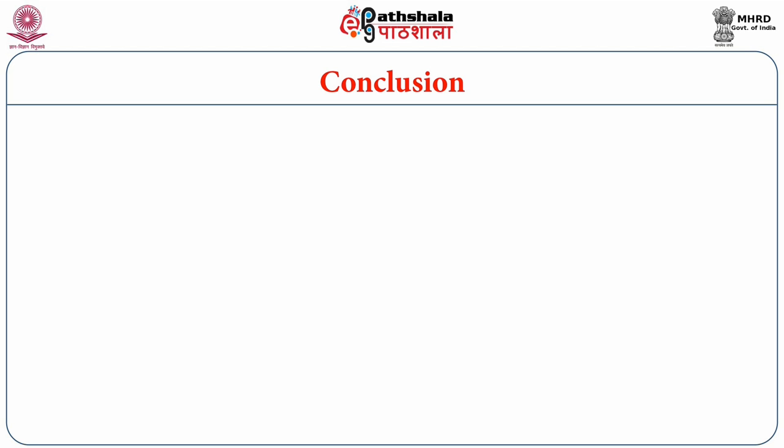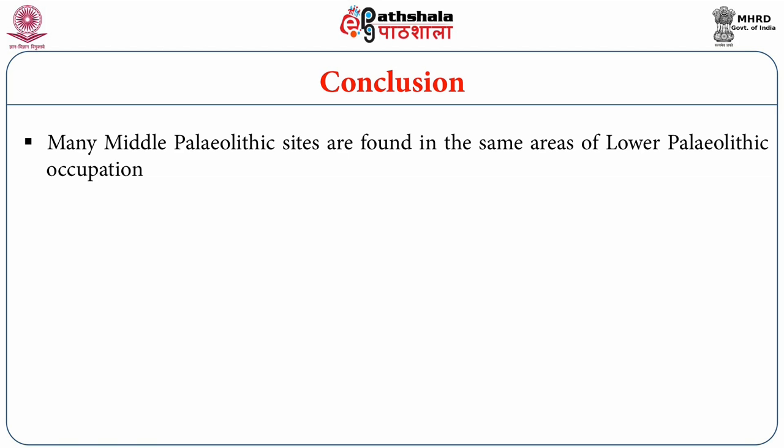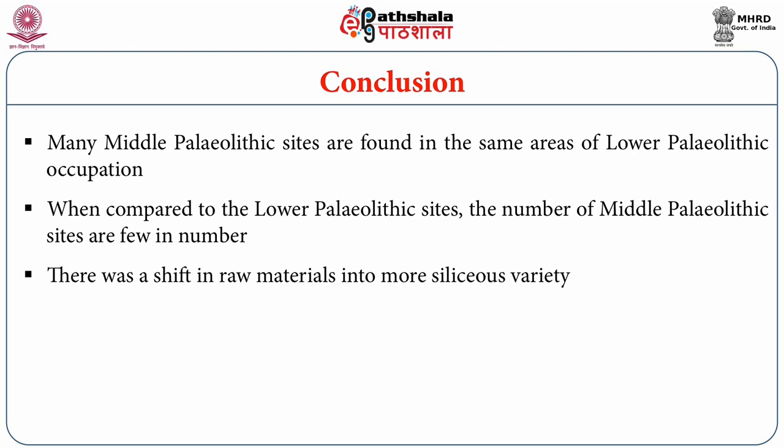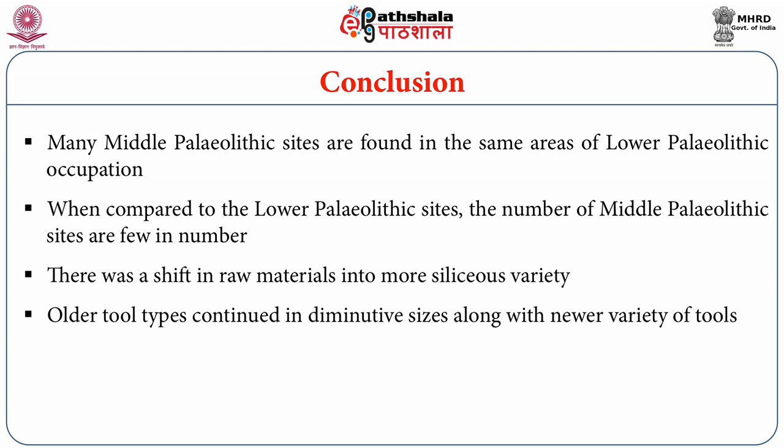In conclusion, many Middle Paleolithic sites are found in the same areas as Lower Paleolithic occupation. When compared to Lower Paleolithic sites, the number of Middle Paleolithic sites is fewer. There was a shift in raw material toward more siliceous varieties — in other words, a preference for high quality raw materials. Older tool types continued in diminutive sizes alongside new flake tool assemblages. In this presentation, we have focused on the Middle Paleolithic as a distinctive phase associated with the emergence of Homo sapiens and their expansion out of Africa. The technology, identified as Middle Stone Age technology, is represented by flake tools and emphasis on high quality raw materials including chert, jasper, and agate.